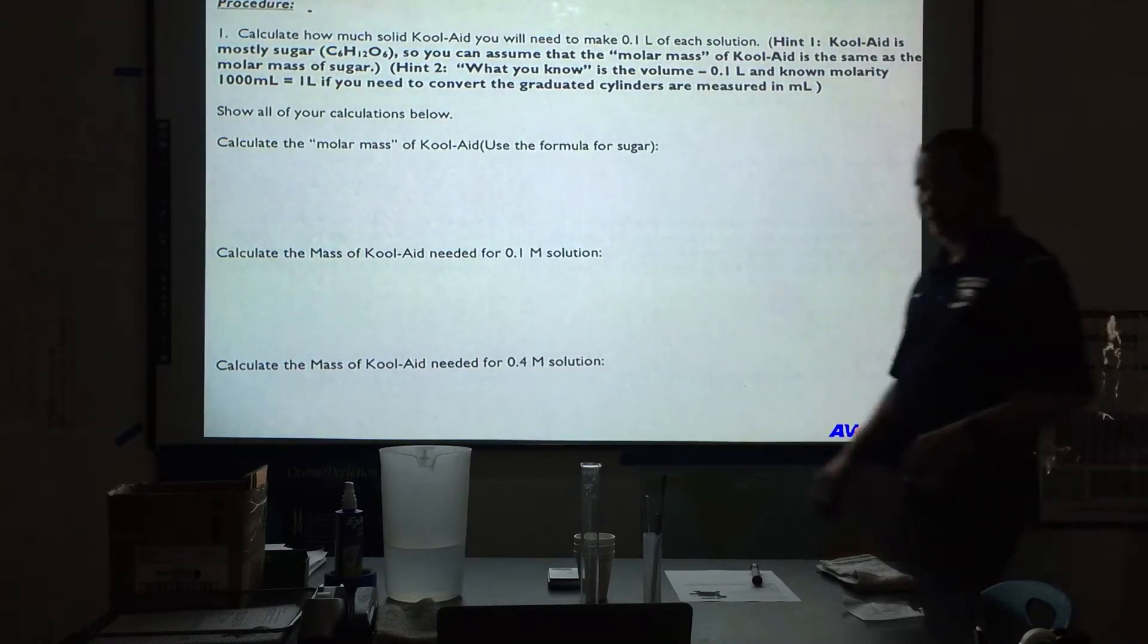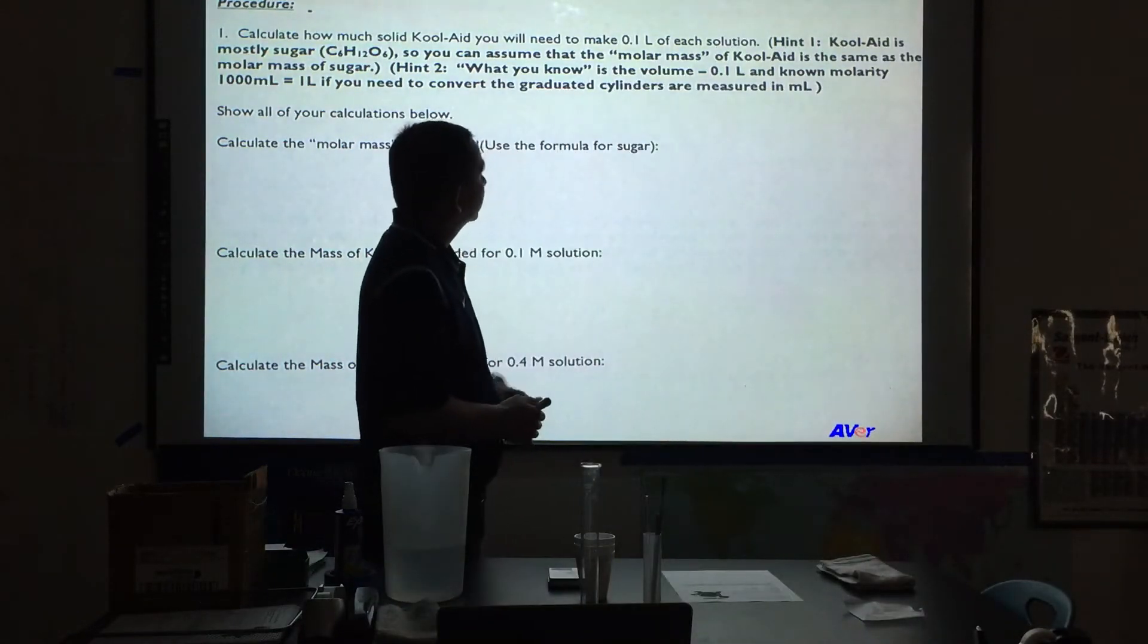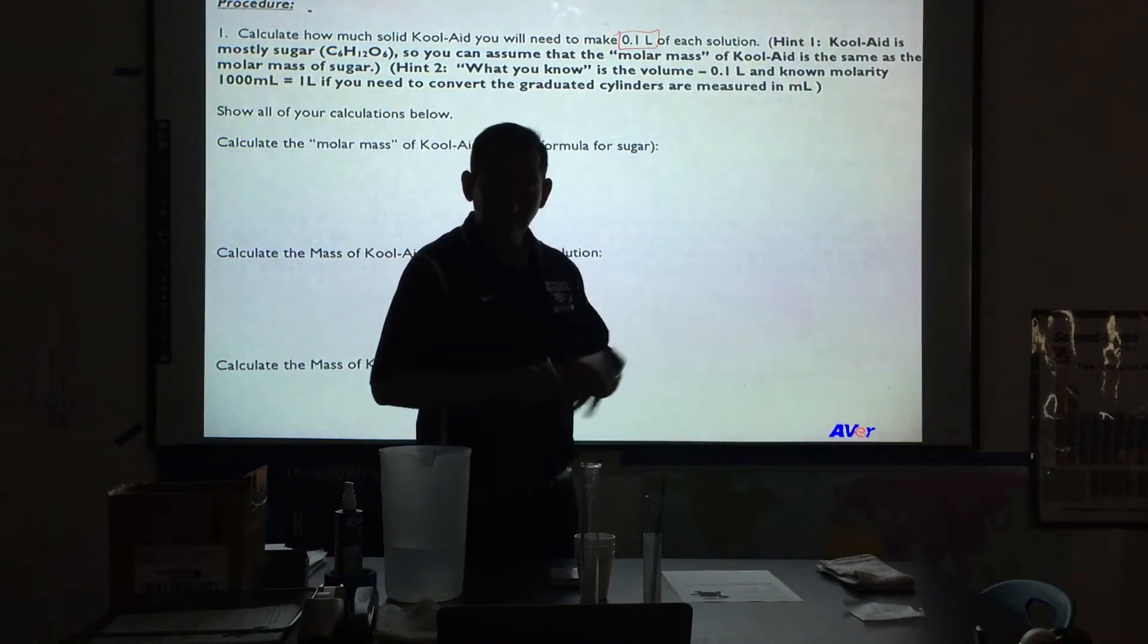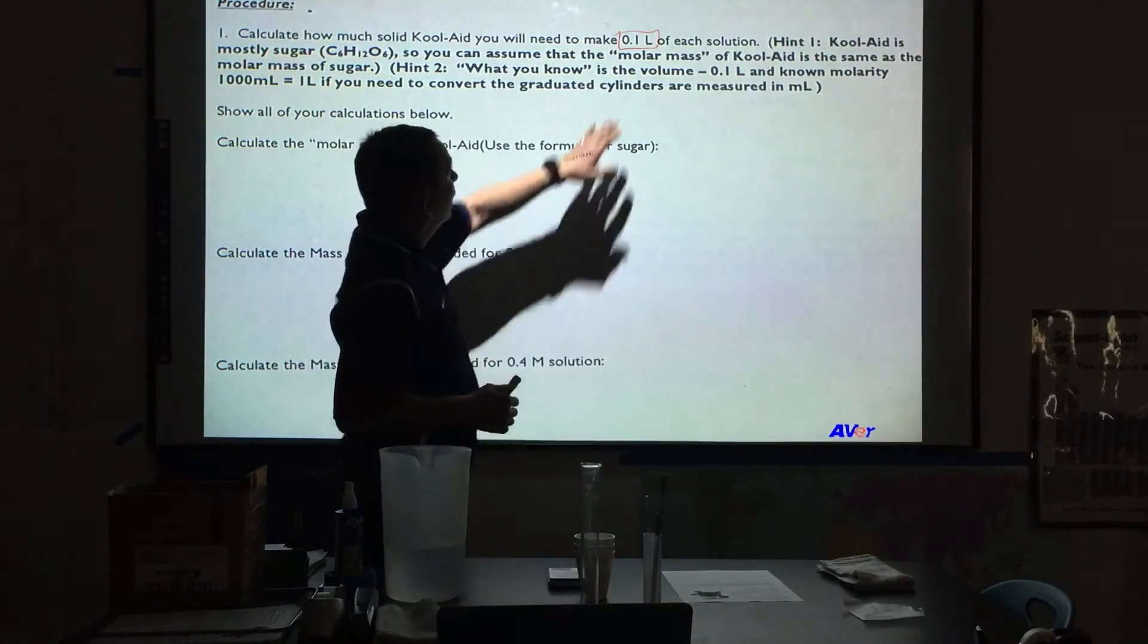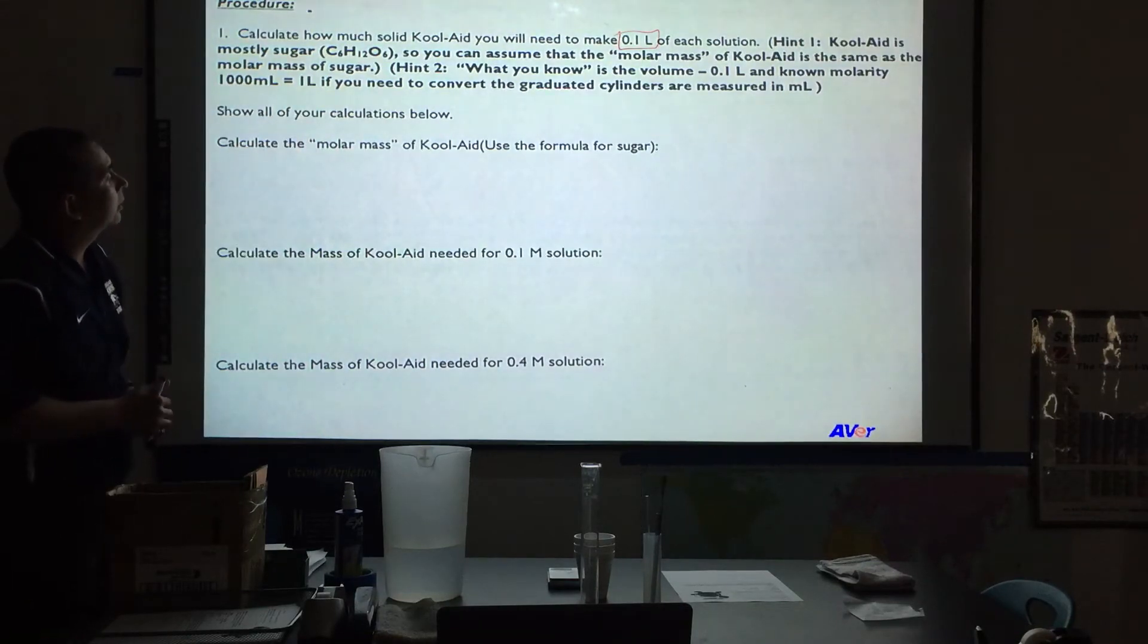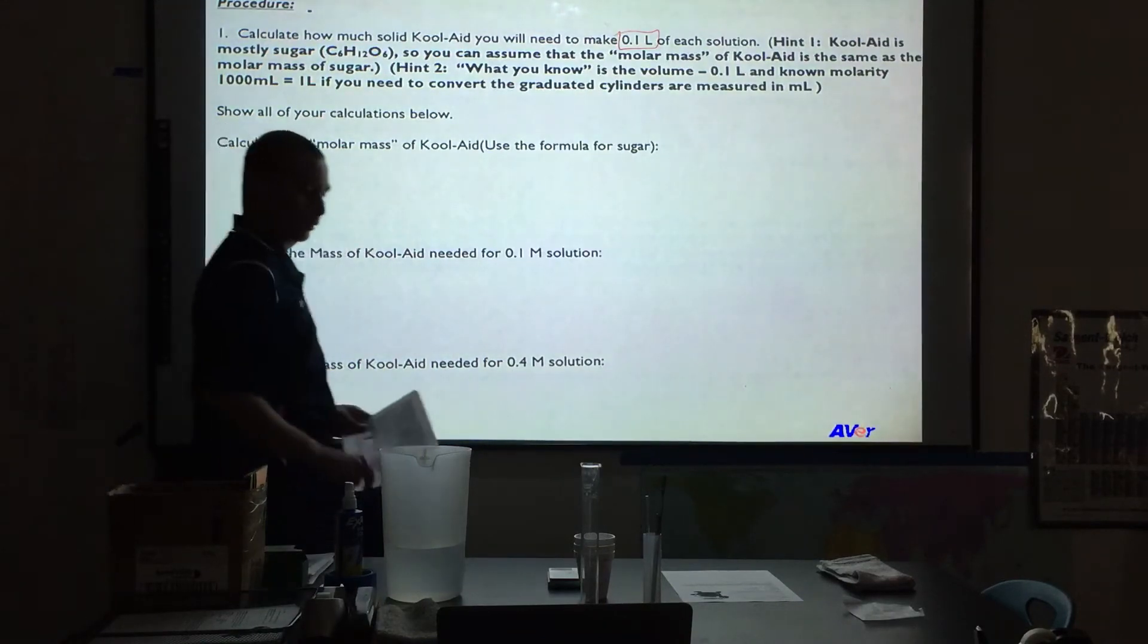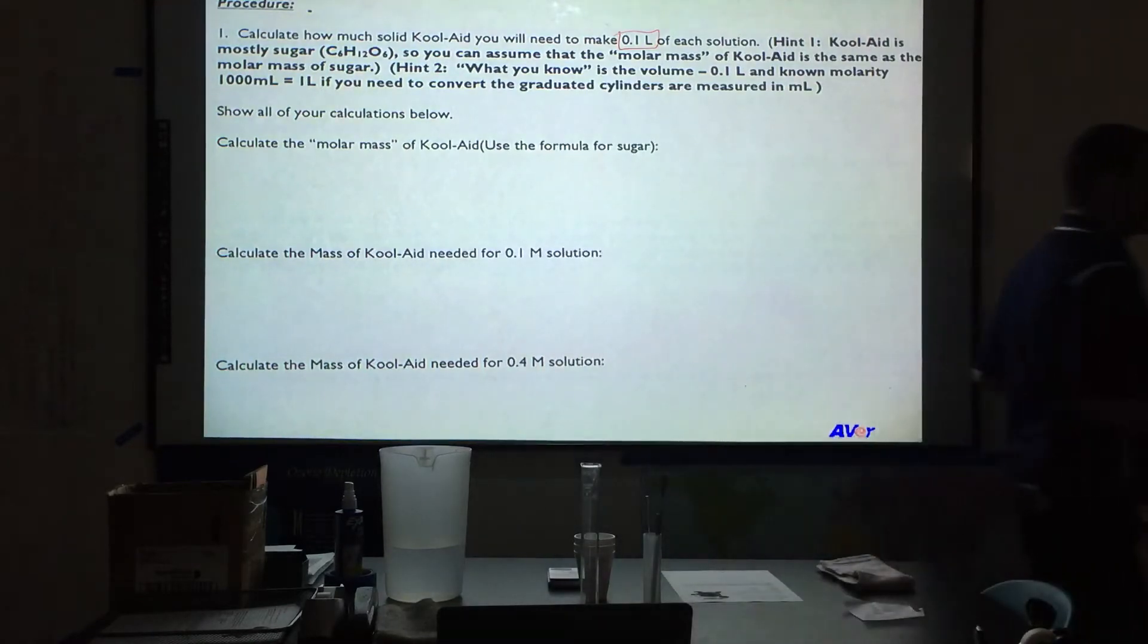Now, these calculations are a bit confusing to some people, so what we want to do is make sure that we know we are not making one liter. We are making a tenth of a liter, which means we're going to use 100 milliliters because our conversion is 1,000 milliliters as equivalent to one liter. So we're going to calculate the molar mass of Kool-Aid, and to do this, I'm going to go over to my other area so you can see my hands doing calculations.